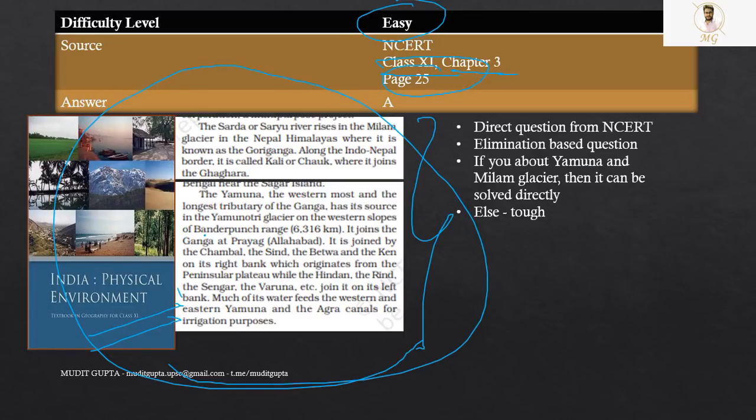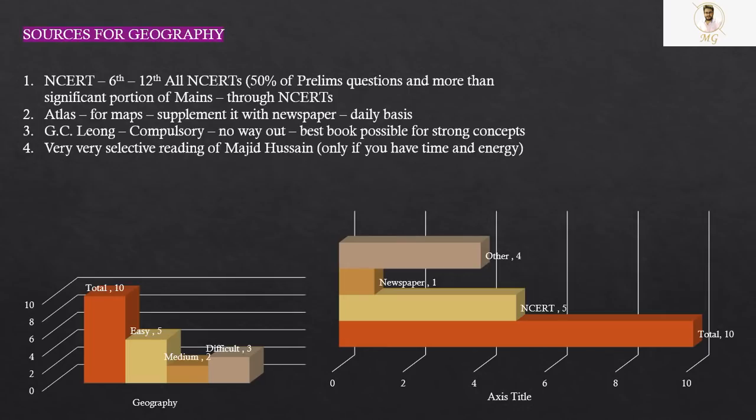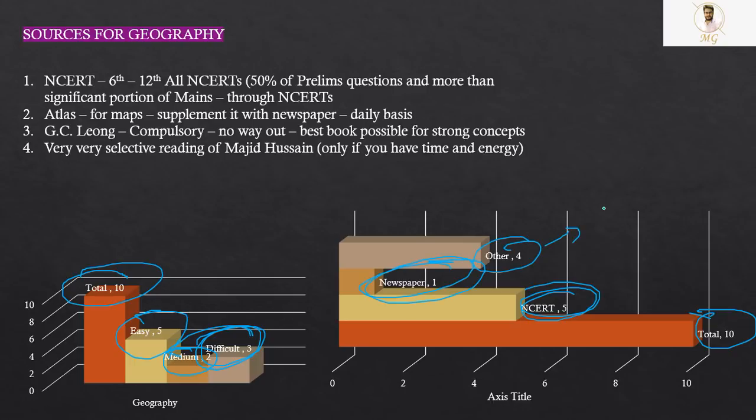NCERT, if you have studied it properly, has also given the name of Bandarpunch and the name of Milam Glacier. So this can be solved directly. So we have analyzed all the 10 questions that were there in geography in this year's prelims. We have seen the trends, we have seen everything. So if we talk about 10 questions, 5 were easy, 2 were medium and 3 were difficult. These 3 difficult questions cannot be handled again. Because no one can handle it. It is not about you, but even other subject experts cannot handle it because they are very out of syllabus questions.